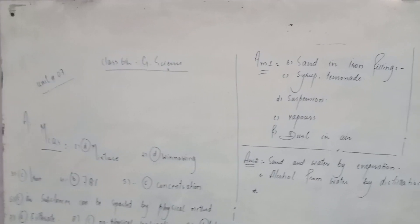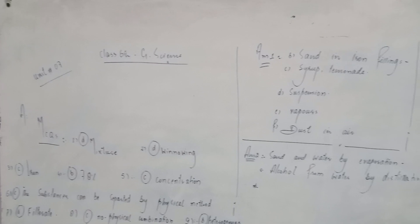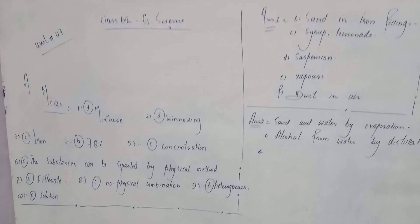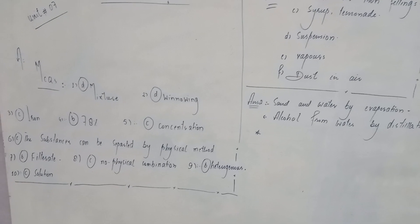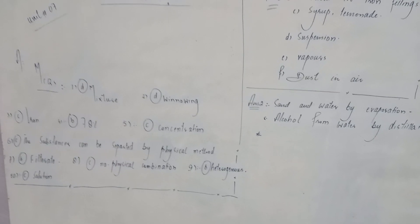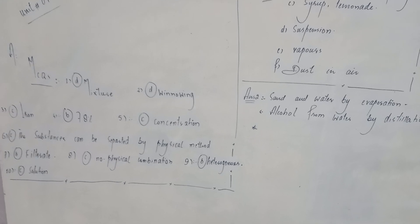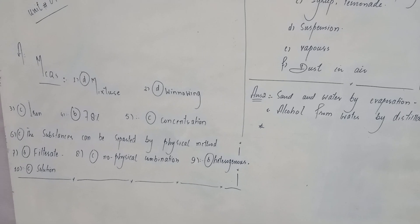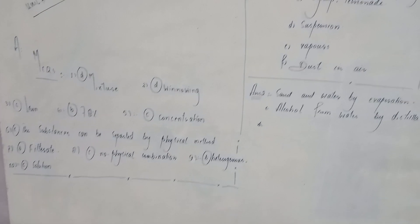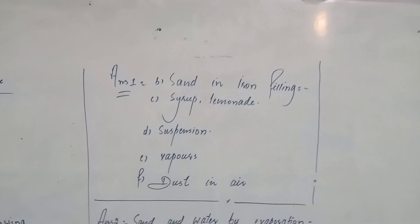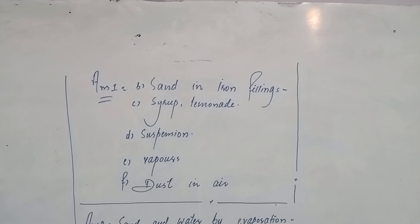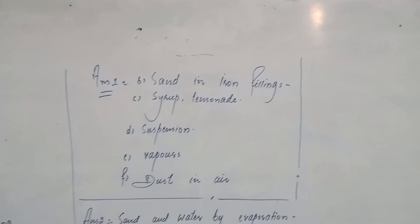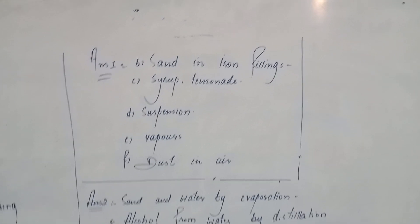Unit 7 classic general science. A mixture contains substances that can be separated by physical methods. Iron is 78% concentration. No physical combination — heterogeneous solution. First short answer: examples of mixtures include iron fillings, syrup, lemonade, suspension, vapors, dust and air.